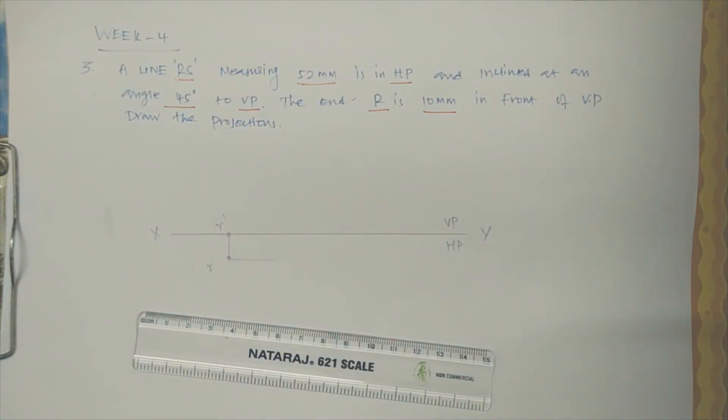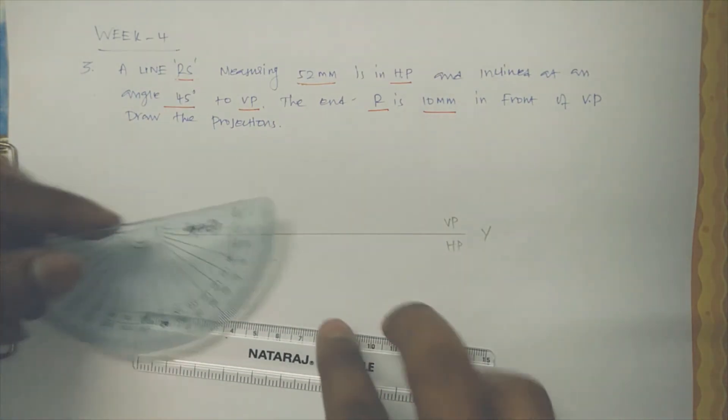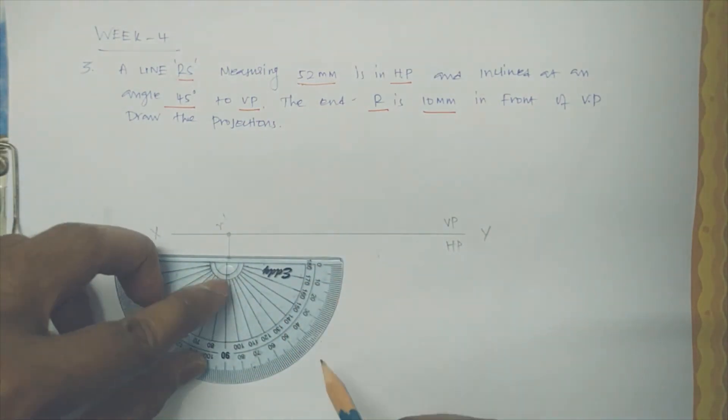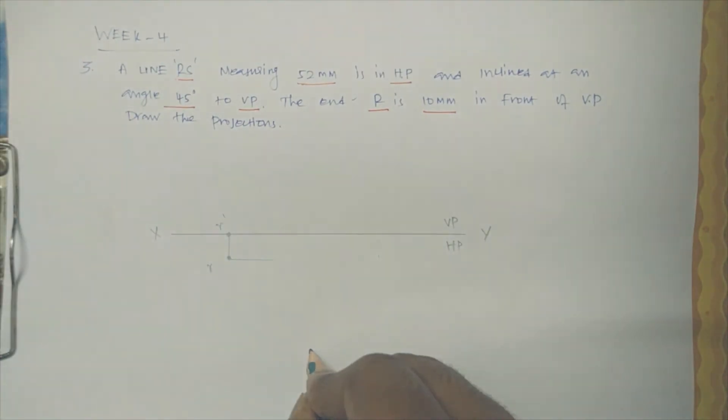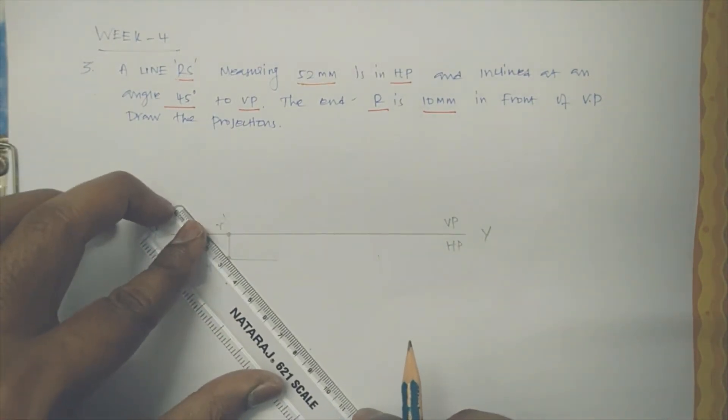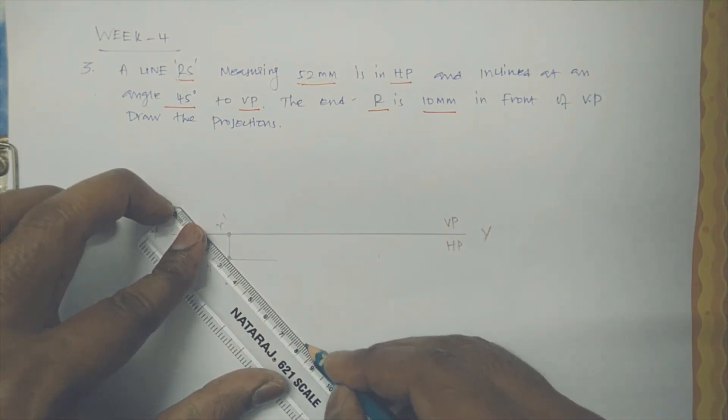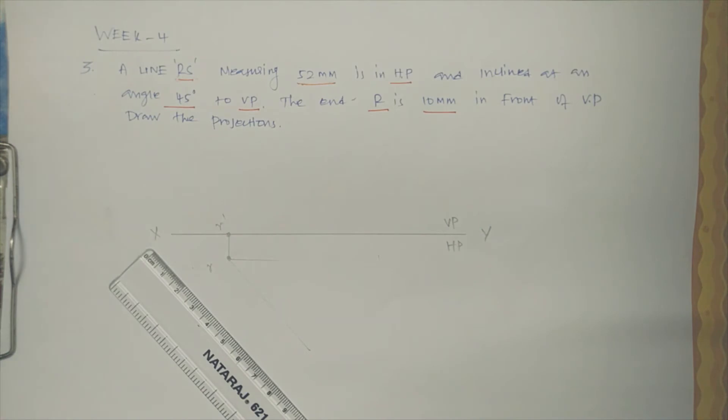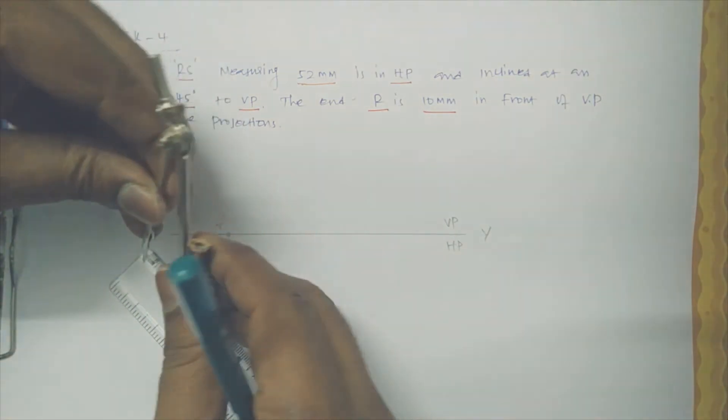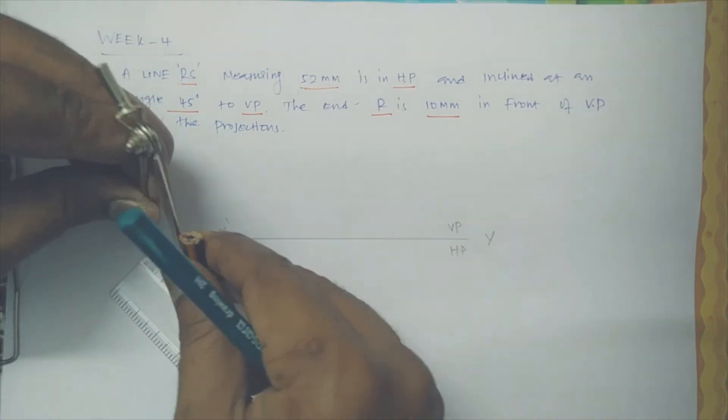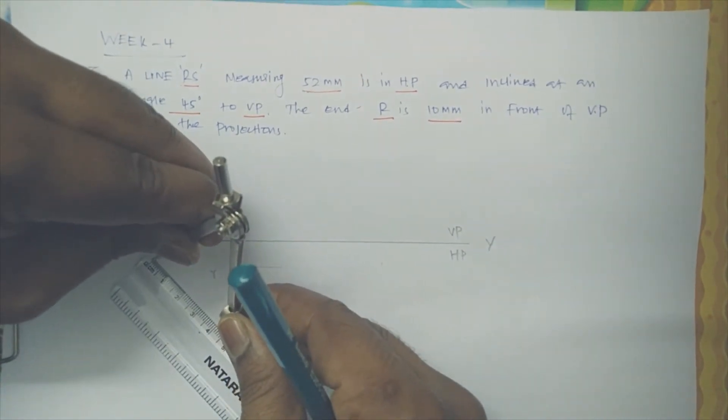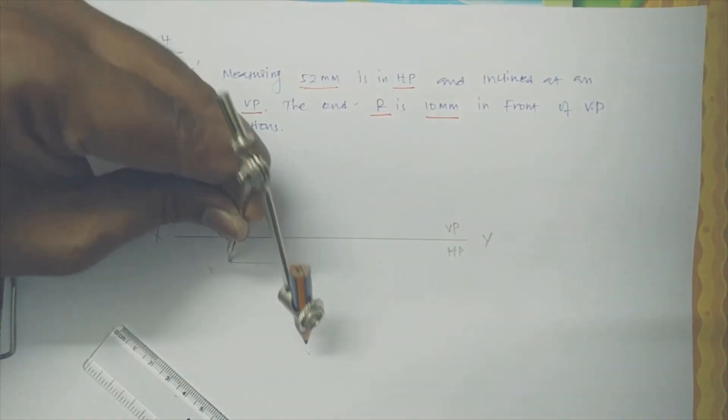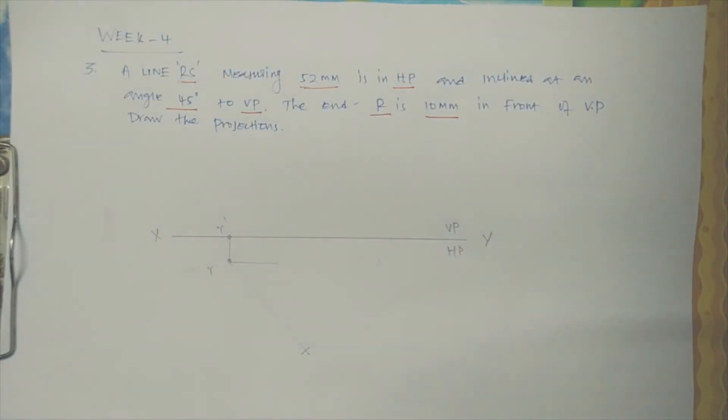With respect to VP, turned to VP, is turned 45 degrees. So it's turned to 45 degrees. Let us mark here, let me mark here 45 degrees. So what is 45 degrees? So the length is nothing but 52mm. We have to measure 52mm. And you mark here. So we have identified that is S, this point is S.